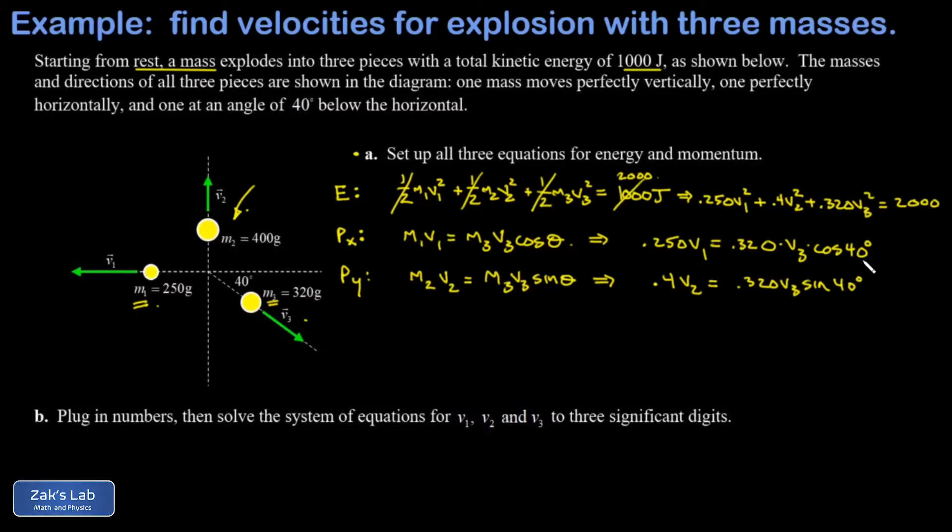And this system actually isn't that bad to solve. It's a non-linear system - all these v's are squared in the energy equation. But these relationships in the second two equations are so simple that this is quick to solve by substitution. The plan here is to solve for v1 in terms of v3 from equation number 2, solve for v2 in terms of v3 from equation 3, sub into the energy equation, and then we have only one unknown and things go pretty quick from there.